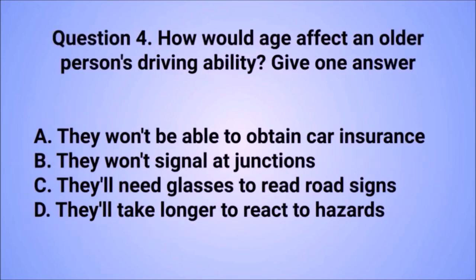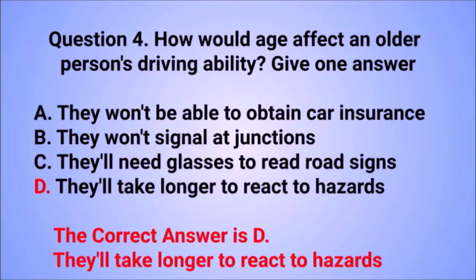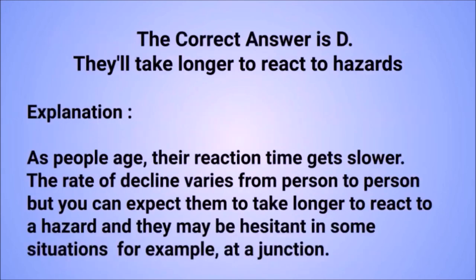Question 4. How would age affect an older person's driving ability? The correct answer is D: They'll take longer to react to hazards. As people age, their reaction time gets slower. The rate of decline varies from person to person, but you can expect them to take longer to react to a hazard and they may be hesitant in some situations, for example at a junction.